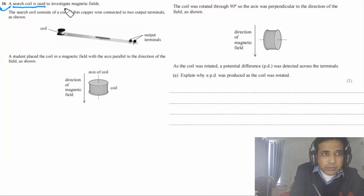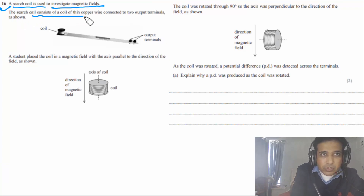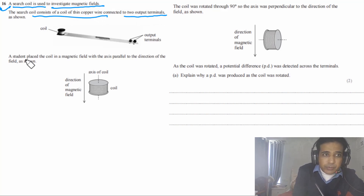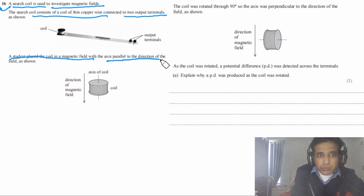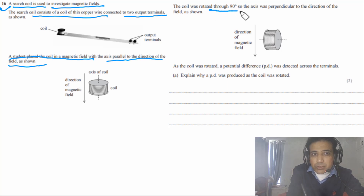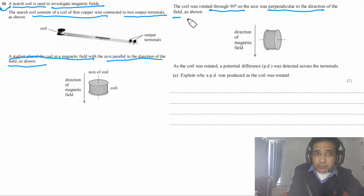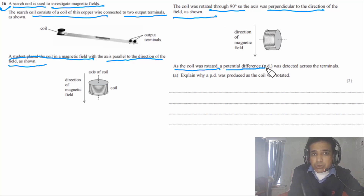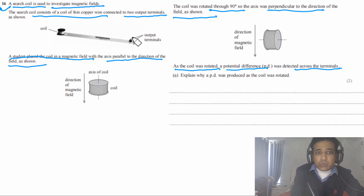Question 16 says a search coil is used to investigate magnetic fields. The search coil consists of a coil of thin copper wire connected to two output terminals as shown in the figure. A student placed the coil in the magnetic field with the axis parallel to the direction of the field. The coil was then rotated through 90 degrees so the axis was perpendicular to the direction of the field. As the coil was rotated, a potential difference was detected across the terminals.